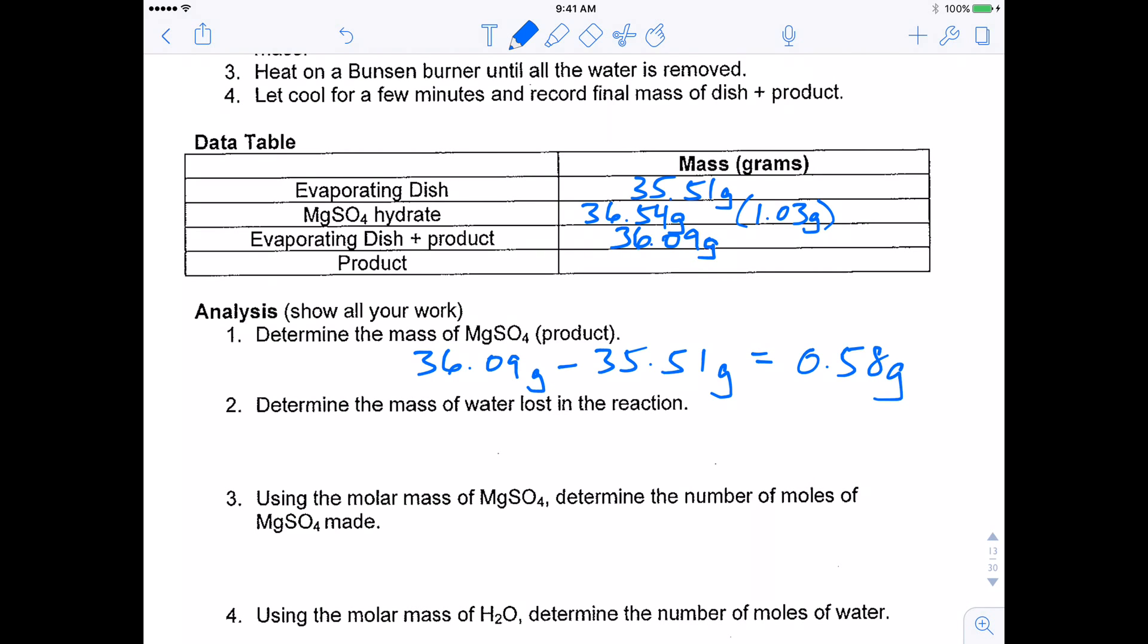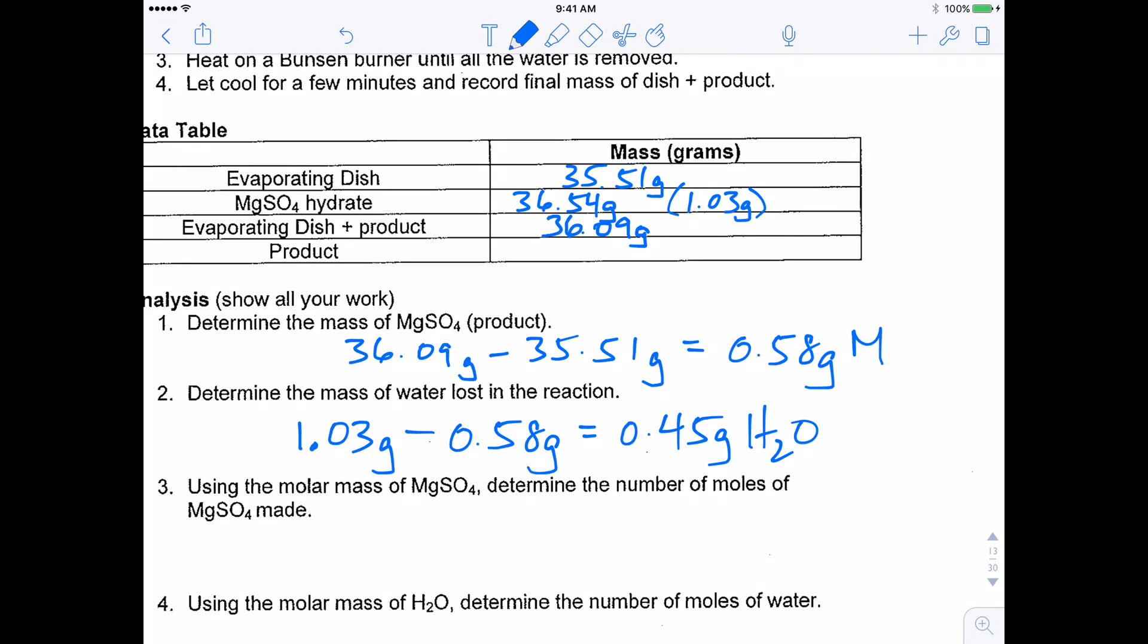Trying to figure out how much water was lost in the reaction. Well, I started with 1.03 grams of solid, the hydrate. And I'm going to subtract out the MgSO4, which is, we just calculated 0.58 grams. And we get 0.45 grams. So that's 0.45 grams of water and 0.58 grams is the MgSO4. So we know how much MgSO4 we made, and we know how much water was evaporated off.